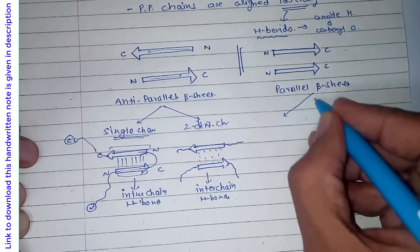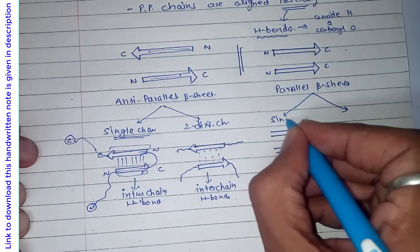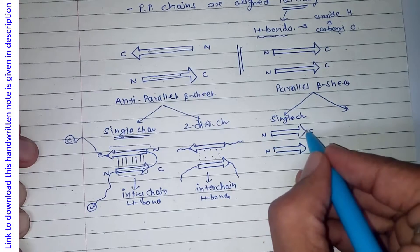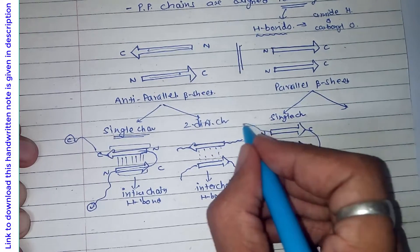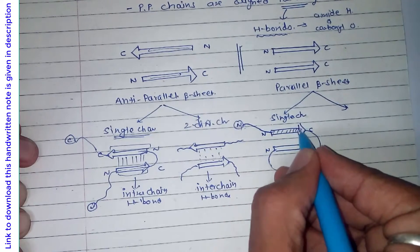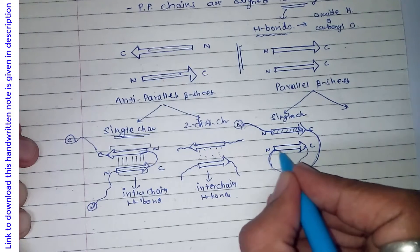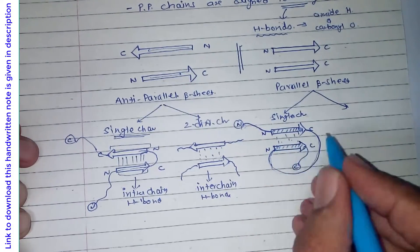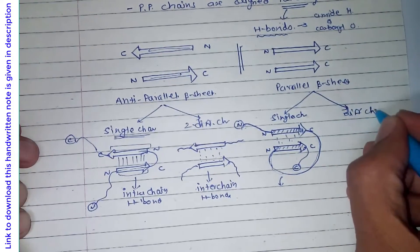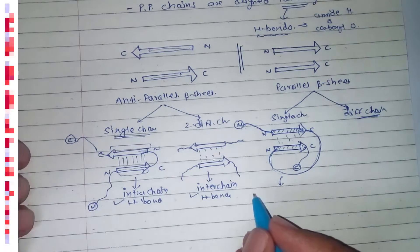In case of parallel beta sheet also, both arrangements are possible. If it is part of a single chain, this is the N-terminal and C-terminal. Part of the chain participates in the beta sheet, then a segment that does not participate, and then again a segment participates. So intra-chain hydrogen bonds are present. Both segments can also be parts of different chains. In beta sheets, both intra-chain as well as inter-chain hydrogen bond patterns can be seen.